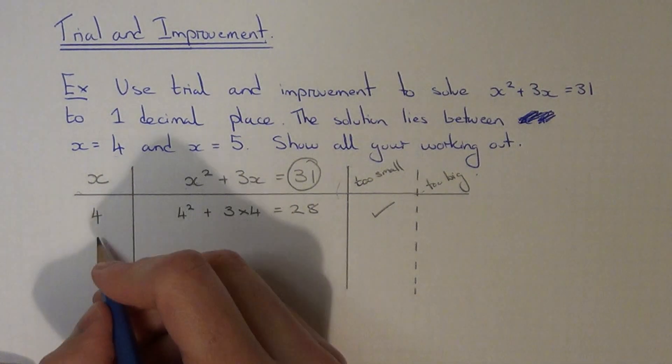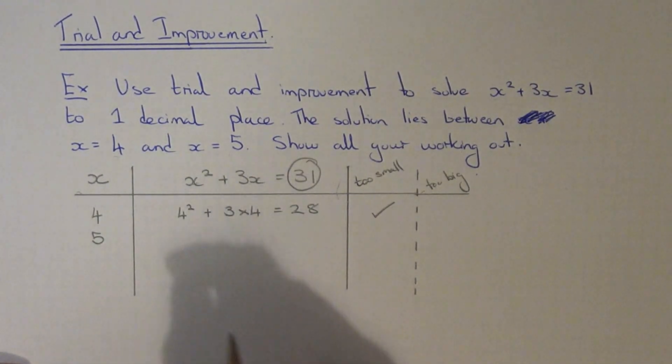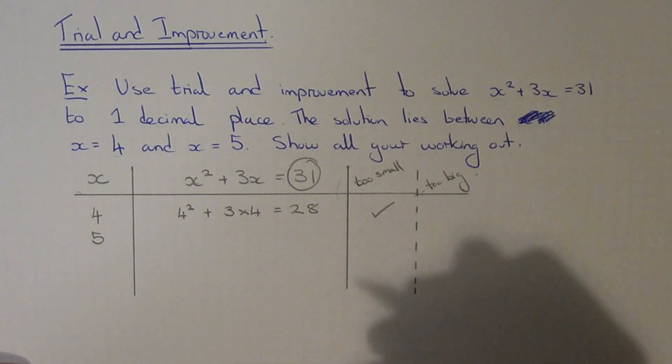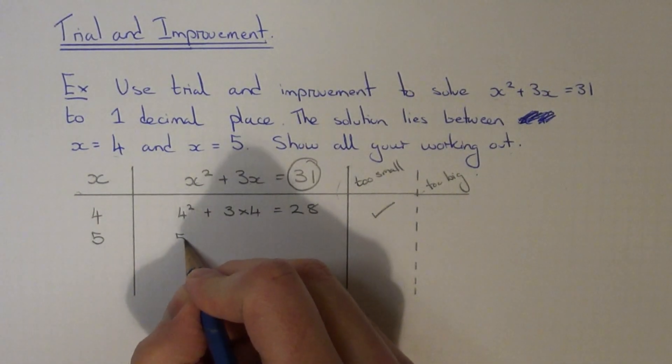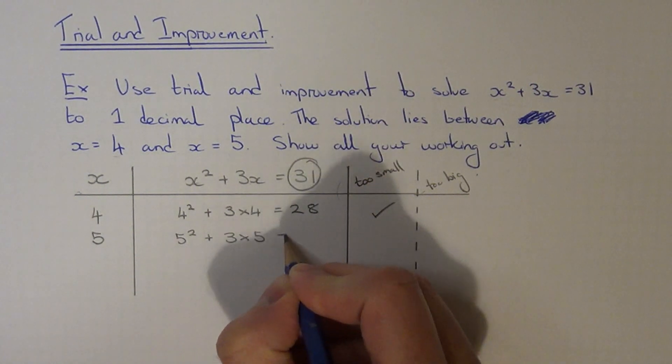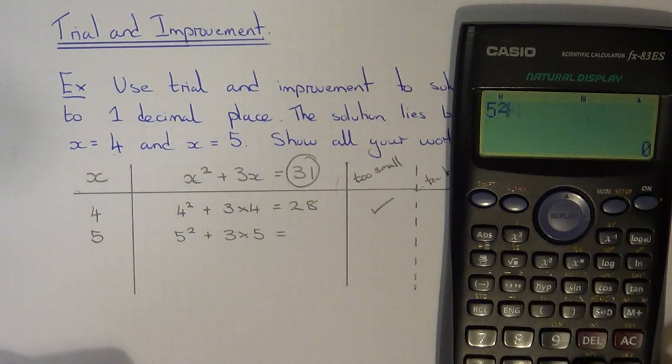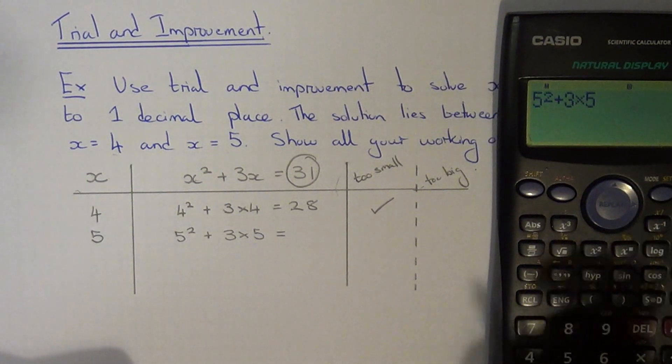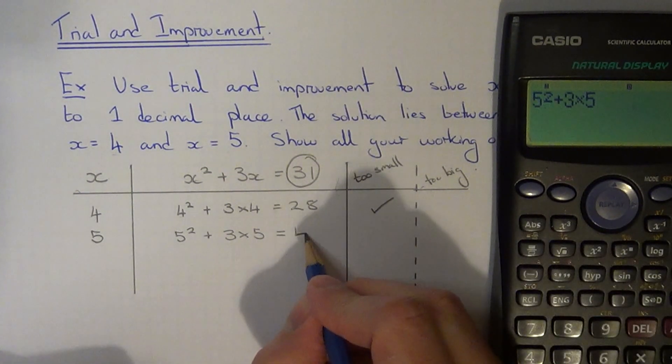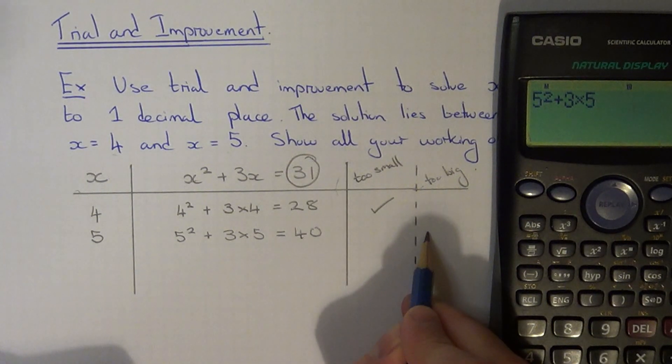So let's go with x equals 5 next. So this one we should be expected to be over 31. So let's just check. So it would be 5 squared plus 3 times 5. So again just use your calculator. 5 squared plus 3 times 5. So that gives us 40. So this time we're over 31 so our answer's too big.